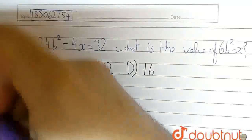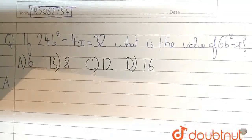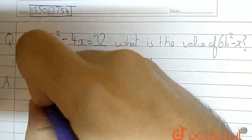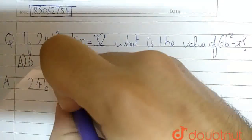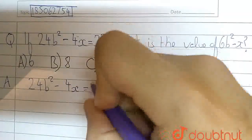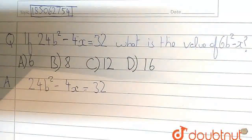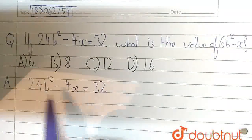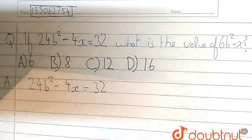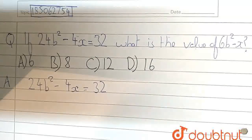So, this is solvable very easily. If we write this 24b² - 4x = 32 here. Now, in this we can see that the common term is 4. Then we can take common between these two.